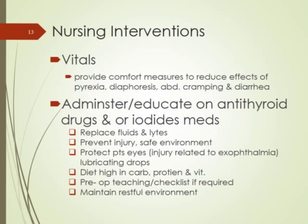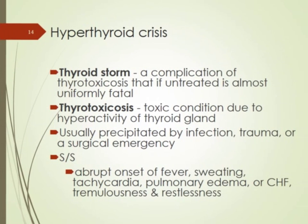If treatments don't work, the patient can progress to thyroid storm — also called thyrotoxicosis — which is the excessive, emergent version of hyperthyroidism requiring surgical preparation. Signs and symptoms include abrupt onset of fever, sweating, tachycardia, flash pulmonary edema, CHF, and restlessness. In the ER, quick diagnosis is critical. Additional signs include excessive abrupt weight loss, AFib or SVT (supraventricular tachycardia), nausea, vomiting, diarrhea, and change in mental status.